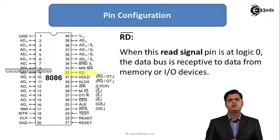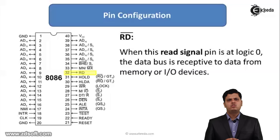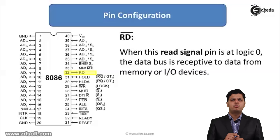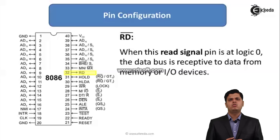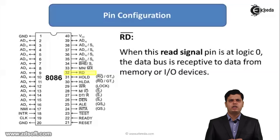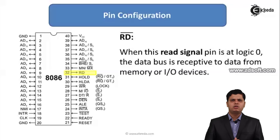The next pin is RD bar — the read signal. RD bar is an active low output signal used for reading data from memory. When this read signal pin becomes logic 0, the data bus is receptive — it accepts data from memory or I/O devices. So it decides the direction of the data bus: when the read signal is 0 (active low), the direction of the data bus is inward (receiving mode).